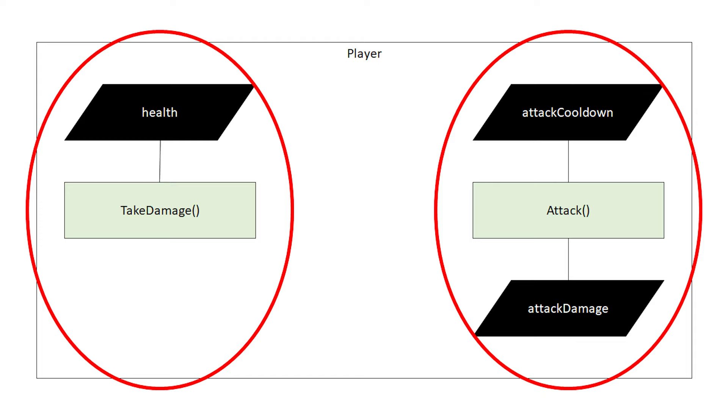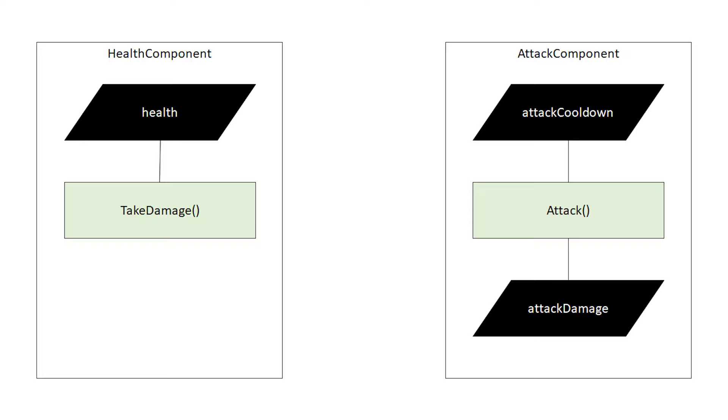We could improve cohesion by splitting this class into two highly cohesive classes — one responsible for taking damage and one responsible for dealing damage. This gives us two classes that can be used by our player object, but they can also be used by any object that can take damage or deal damage. And this leads us to the idea of creating modular components that different objects can make use of.